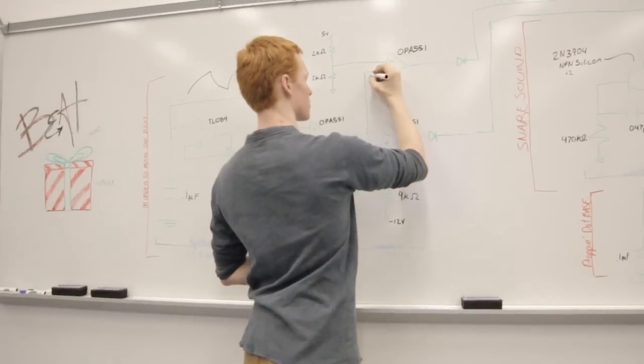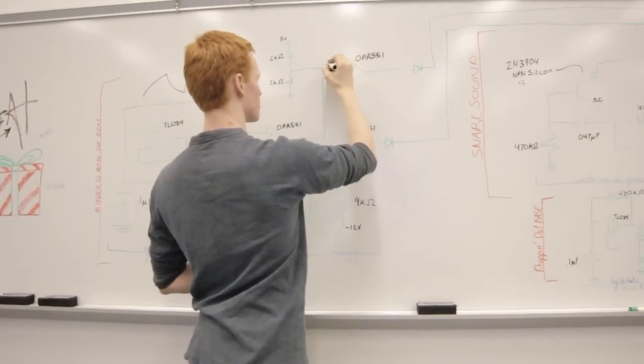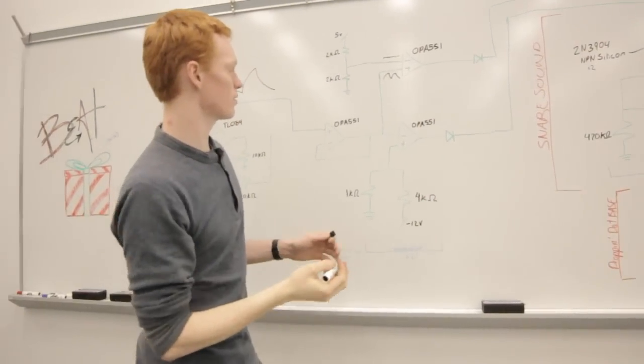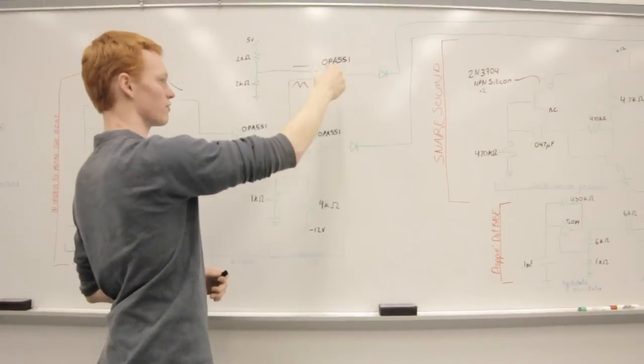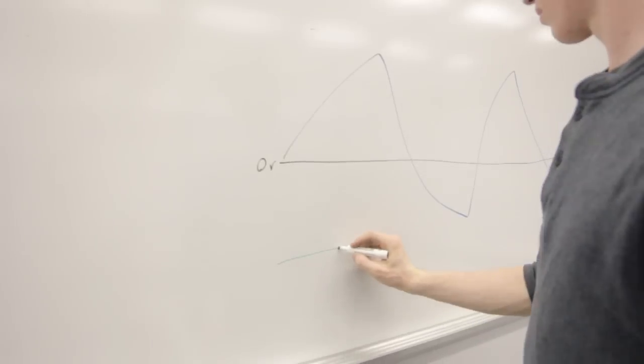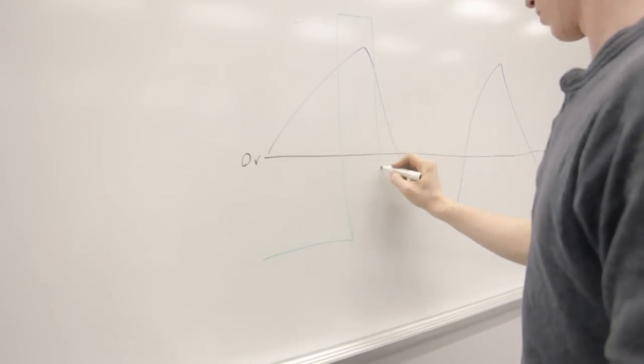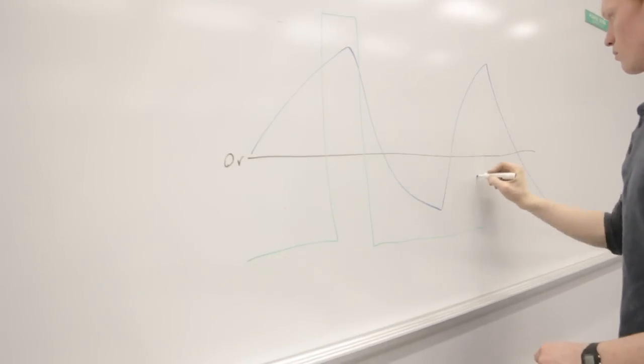The first comparator takes a look at the shark wave, and compares it to a two-and-a-half-volt straight signal, and whenever the shark wave gets above two-and-a-half volts, it rails high, and when it's below, it rails low. So we get a square wave that looks like this.